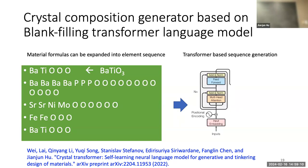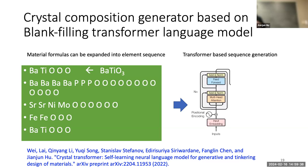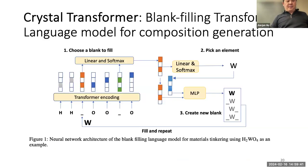We came up with the idea to convert our chemical formula into this kind of sequence. To make the representation unique, we sort the element symbols by electronegativity. In this way, any formula is always represented by a unique sequence of tokens. Once you have the sequence tokens, we use a blank-filling transformer model for this generation design. Here it shows the basic idea of this model: you start with a formula sequence at the bottom, apply transformer encoding so each token is represented by a transformer-encoded latent feature, then do a linear and softmax to pick elements.